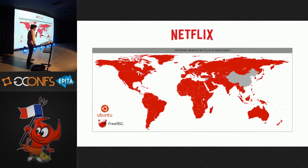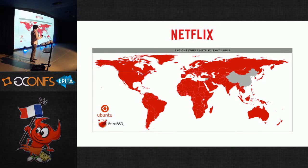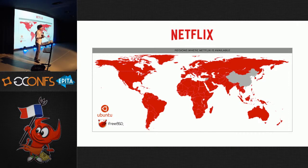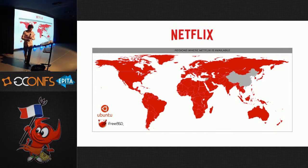I work at Netflix, and this shows the regions where Netflix is available. We have Linux Ubuntu on the cloud and FreeBSD on our CDN. When you first log into Netflix and authenticate and browse, you're on the Linux cloud — that's AWS — and when you hit play, you're coming from the FreeBSD CDN. Sandvine reports show that we're over 33% of the internet traffic in the US at night.